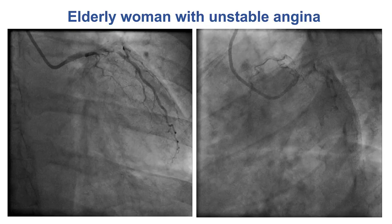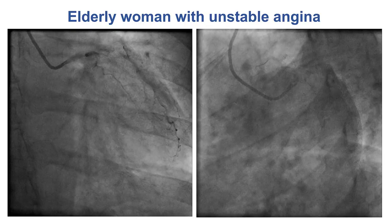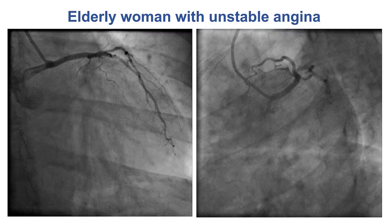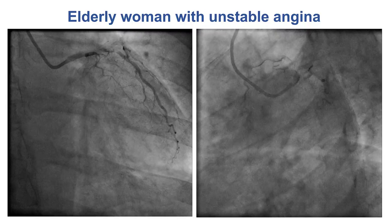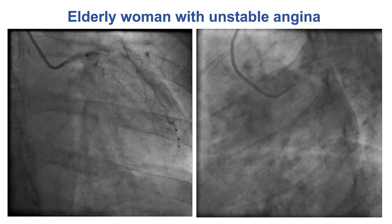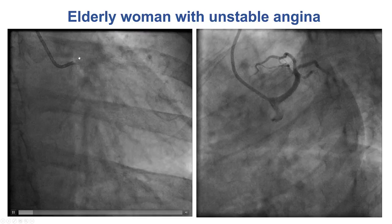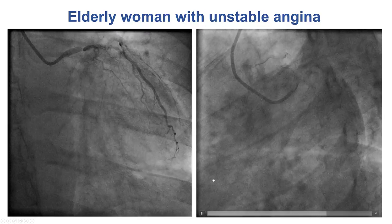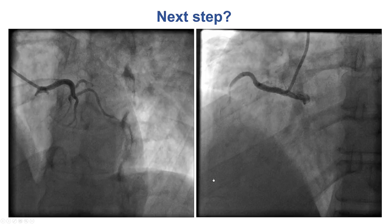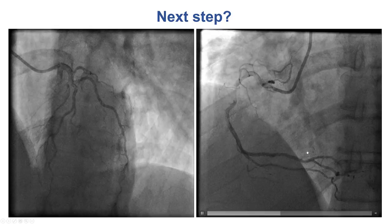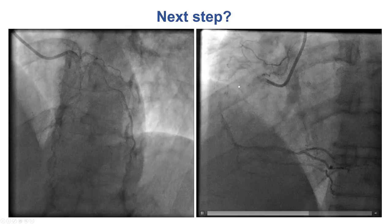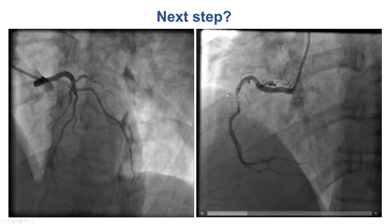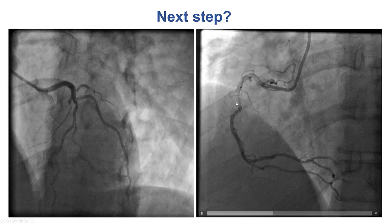The patient was an elderly woman who presented with unstable angina. She underwent diagnostic angiography using radial access that demonstrated no significant disease in the left main as well as the LAD. There was a high-grade lesion in the proximal to mid right coronary artery that appeared to be the culprit lesion.